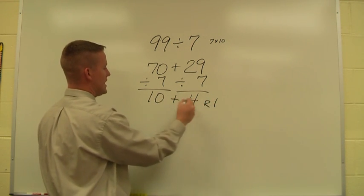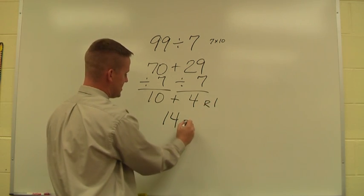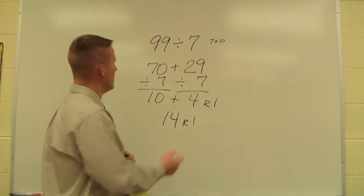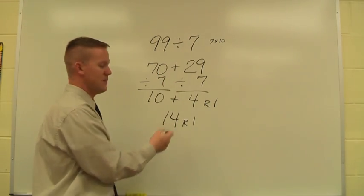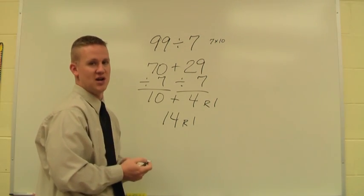Now I put my numbers back together. 10 plus 4 is 14. I don't add the remainder. I simply put it back on at the end. So 14 remainder 1 is my answer. So a difficult division problem can be done pretty quickly and possibly even mentally using this friendly number strategy.